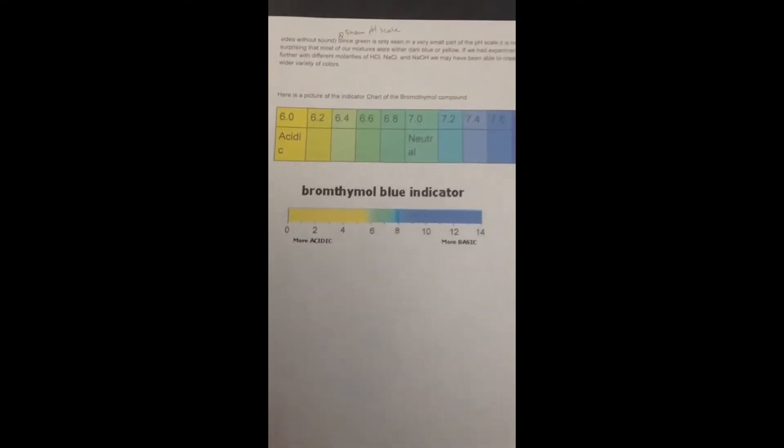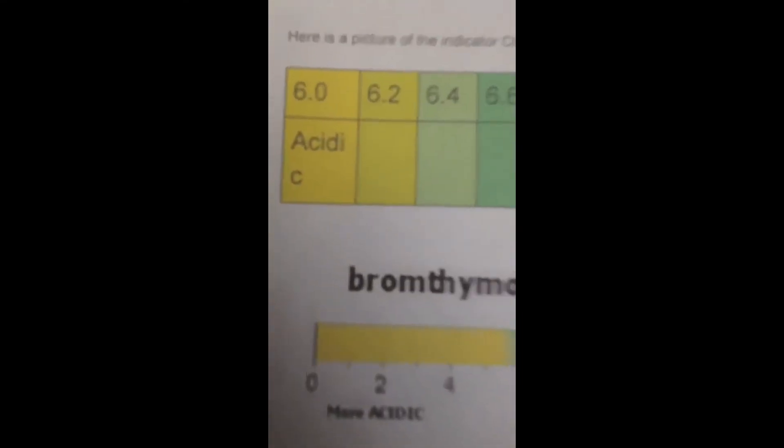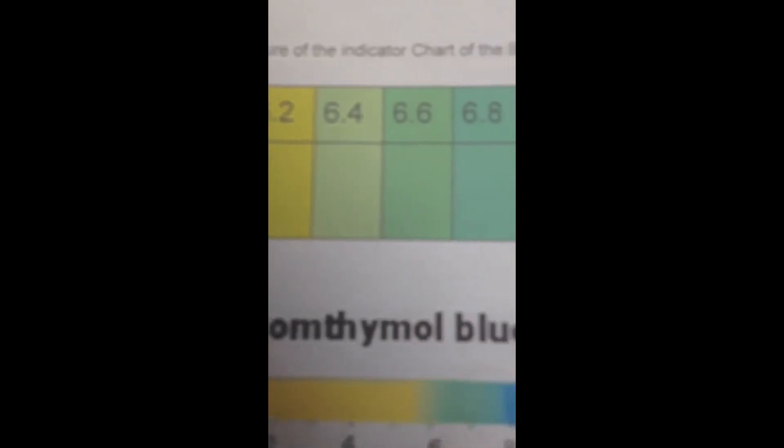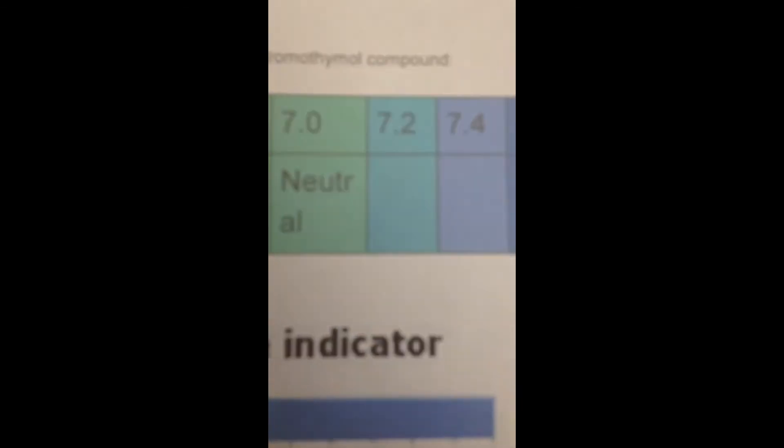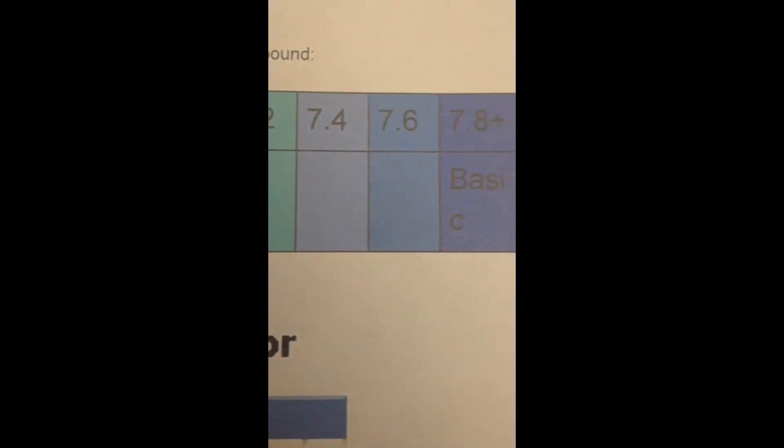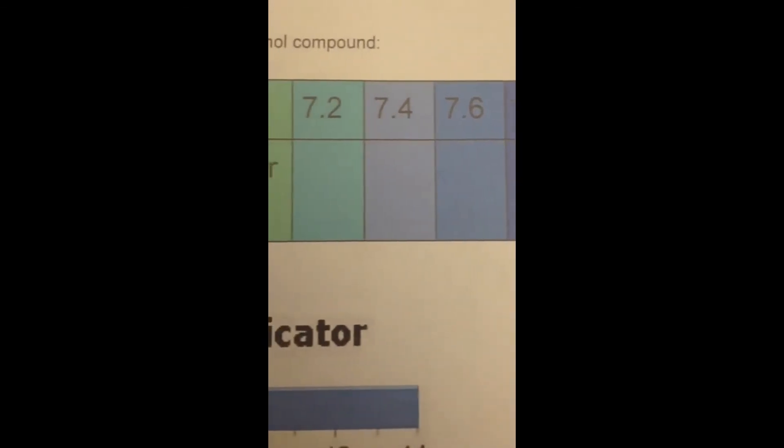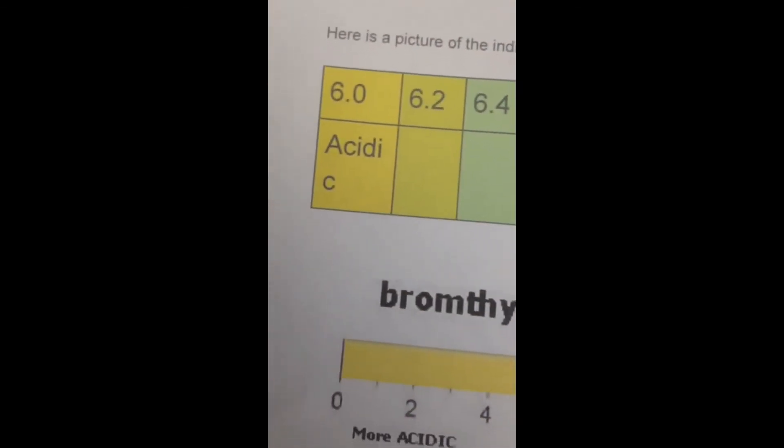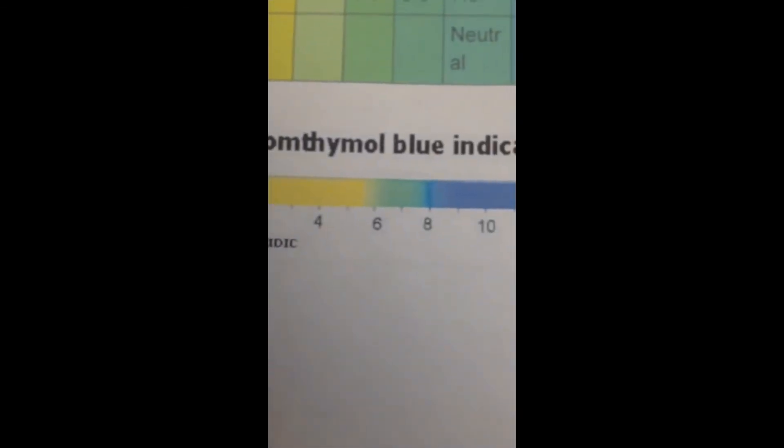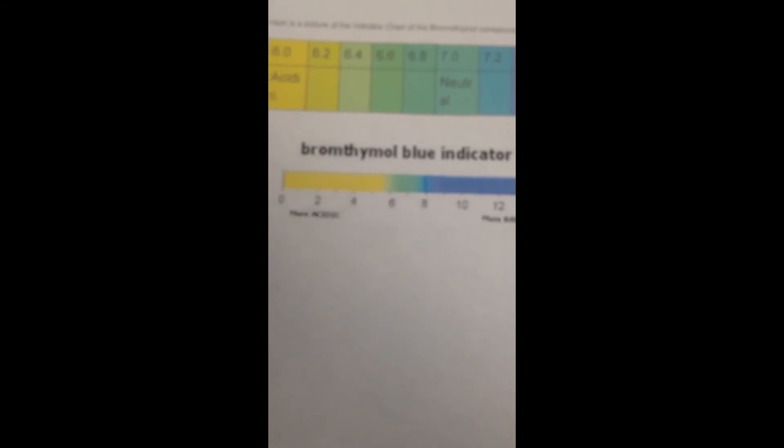After observing changes made to the equilibrium, we added varying amounts of both NaOH and HCl, which had a greater influence in the color, in order to create a green neutral solution. In our case, we weren't able to get the green neutral color solution. Since green is only seen in a very small part of the pH scale, it is not surprising that most of our mixtures were either dark blue or yellow.